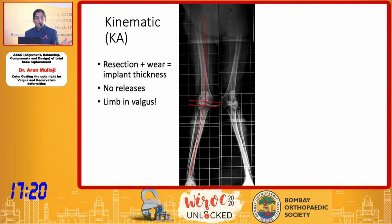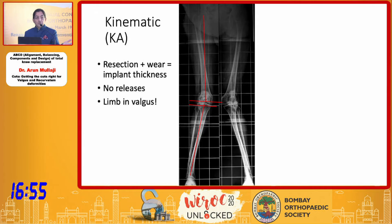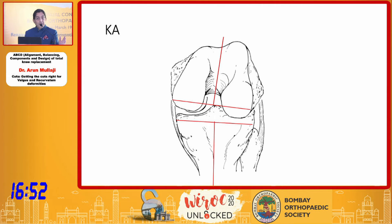With kinematic alignment, you generally don't need to do any release, but you will leave the limb in significant valgus. When you just cut the bones taking into account the amount of wear as well as implant thickness — resected bone plus wear equals implant thickness — that is the philosophy. So you end up with substantial valgus. In the flexion gap you will be okay, but you need to be careful about how your component is rotated.